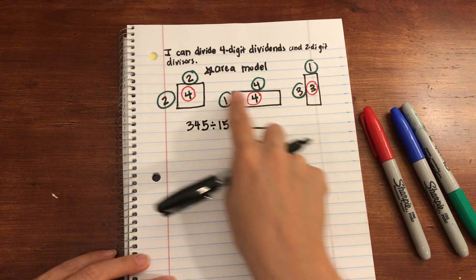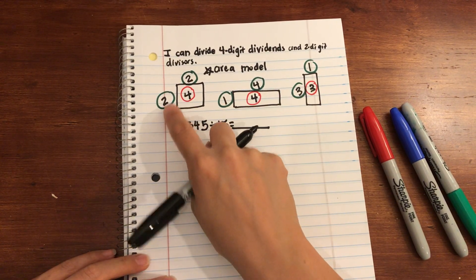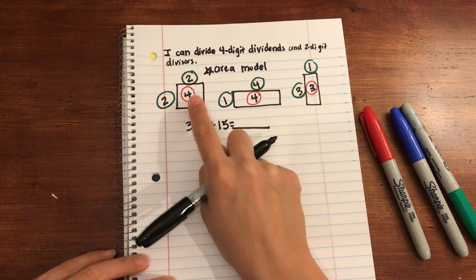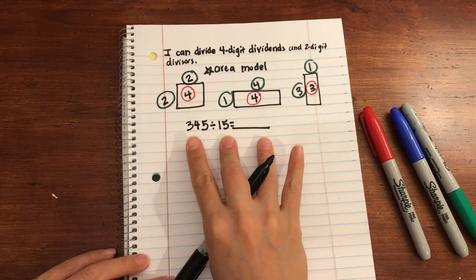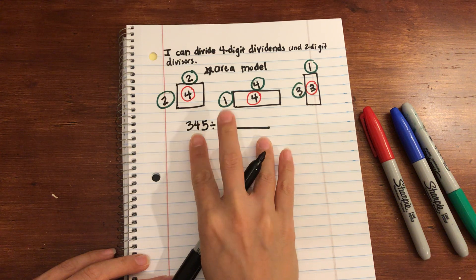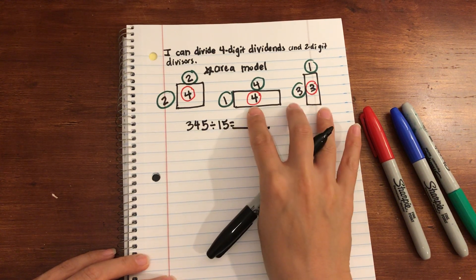So using the same idea of factor times a factor is equal to a product, we don't have two factors here. Instead we have a dividend, a divisor, and we're looking for the quotient.